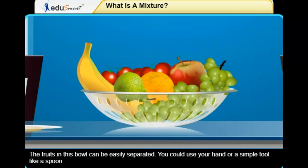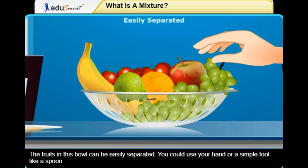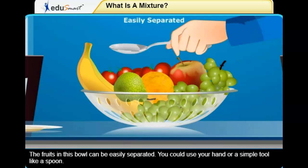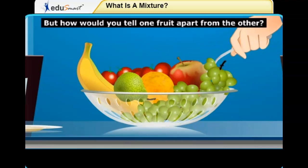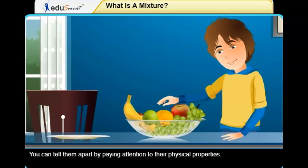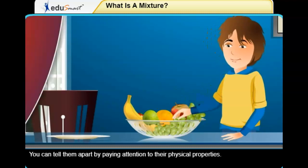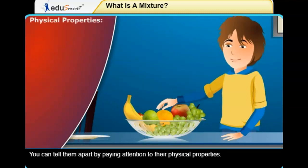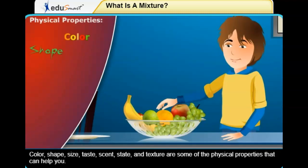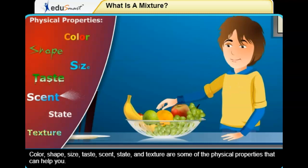The fruits in this bowl can be easily separated. You could use your hand or a simple tool like a spoon. But how would you tell one fruit apart from the other? You can tell them apart by paying attention to their physical properties. Color, shape, size, taste, scent, state, and texture are some of the physical properties that can help you.